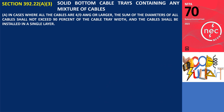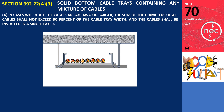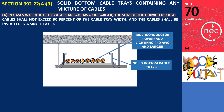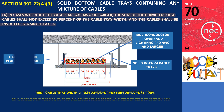Section 392.22(A)(3)(a) states that in cases where all the cables are 4-aught AWG or larger, the sum of the diameters of all cables shall not exceed 90% of the cable tray width, and the cables shall be installed in a single layer.